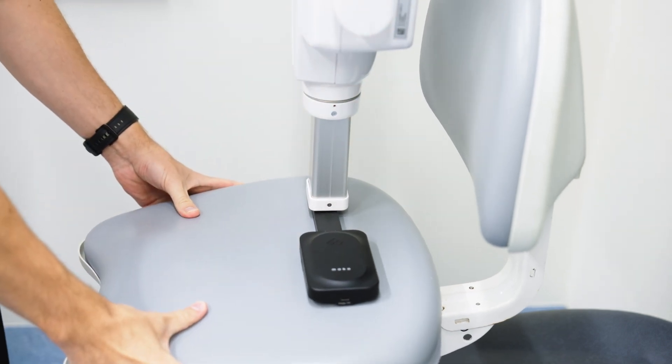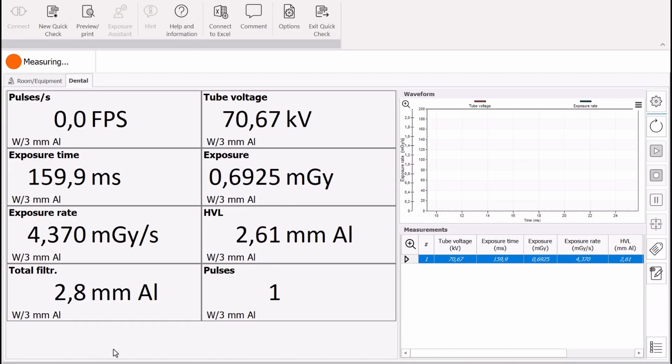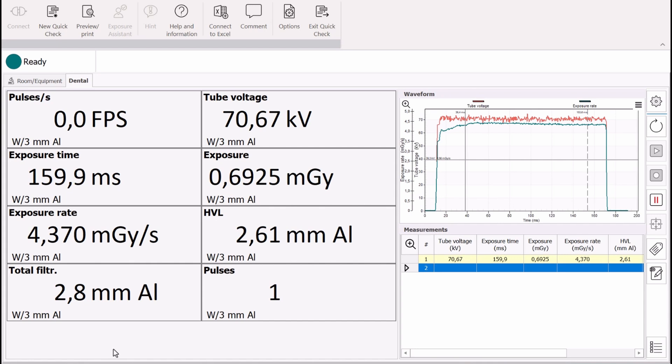Make an exposure on the x-ray system. Values for kV, dose, dose rate, exposure time, HVL, total filtration and number of pulses will be displayed automatically.